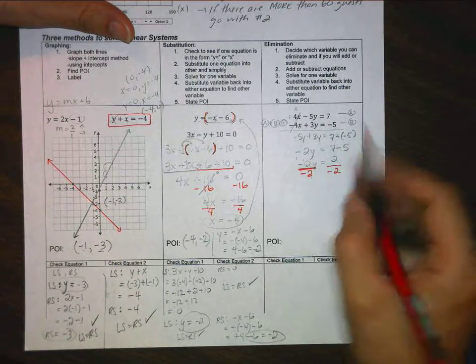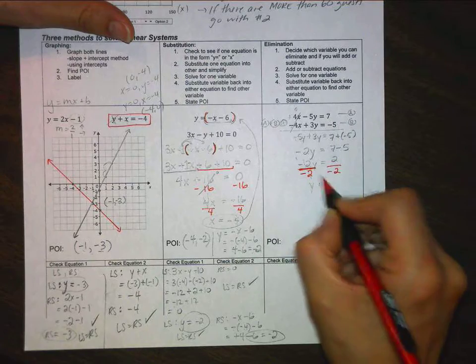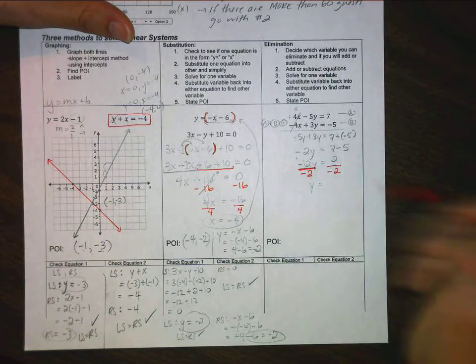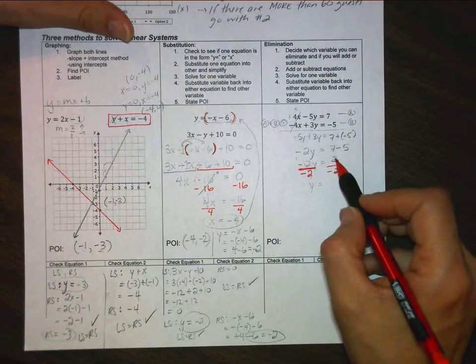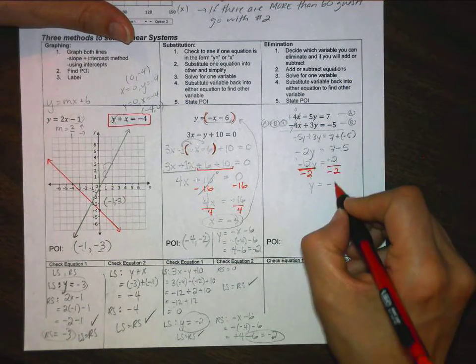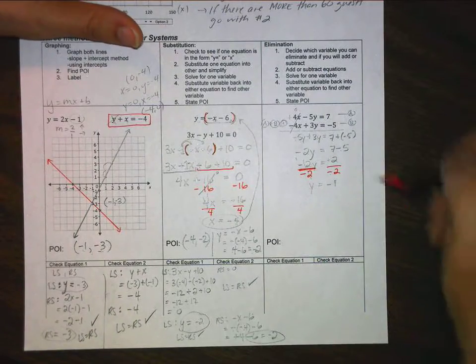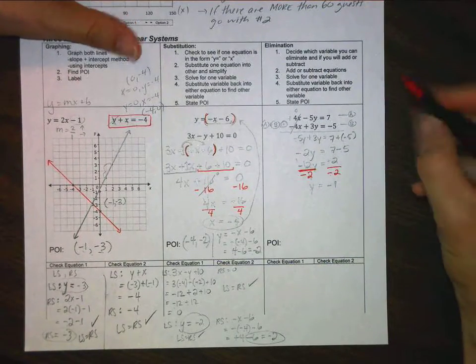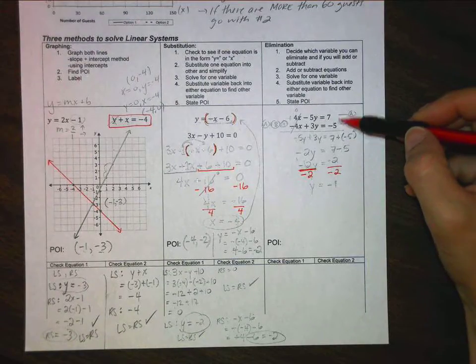So I'm left with y, though just the numbers in front become 1. Now I have a positive divided by a negative, so that's going to be negative, and it's going to be negative 1. Now again, that's only half of my point of intersection, so that means I need to solve for the x part.